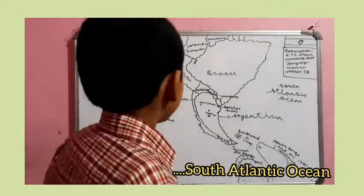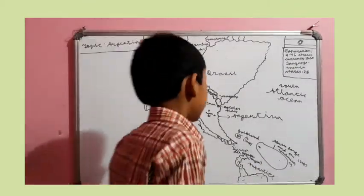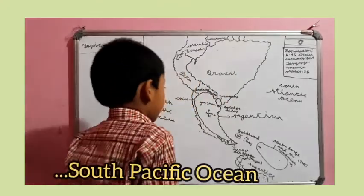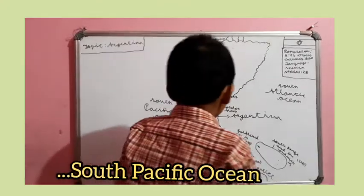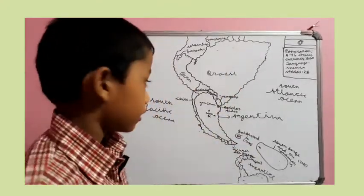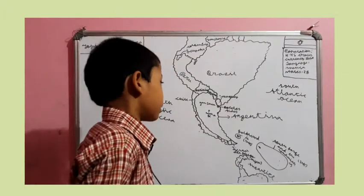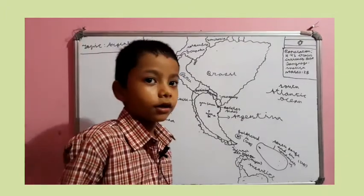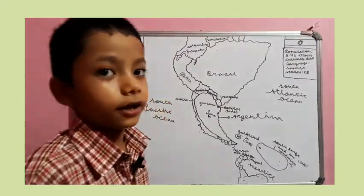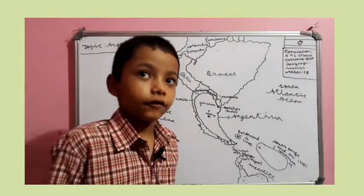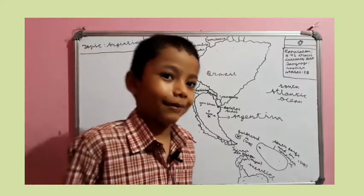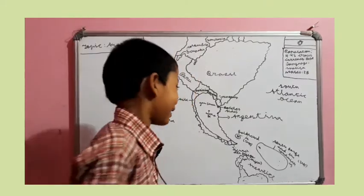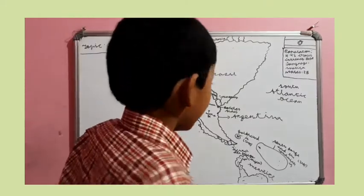There are other cities of Argentina called San Juan, Santa Fe. It looks like the capital of New Mexico, and so on.